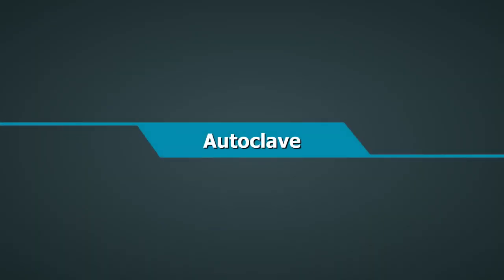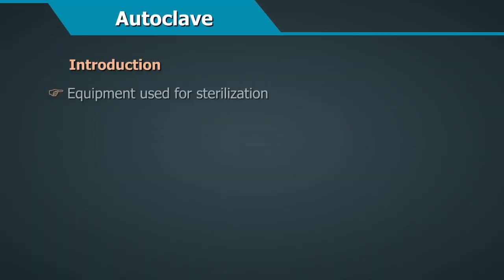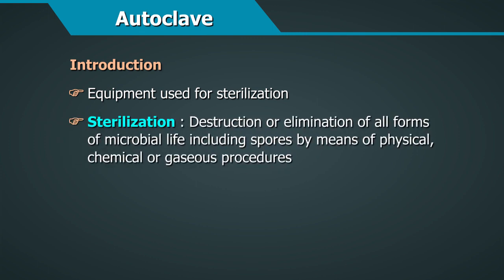Autoclave. The autoclave is an equipment used for sterilization. The word sterilization means the destruction or elimination of all forms of microbial life, including spores present on inanimate objects by means of physical, chemical or gaseous procedures. Laboratories should be equipped with a reliable autoclave of adequate capacity.